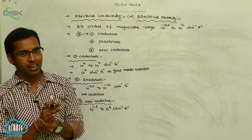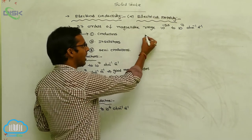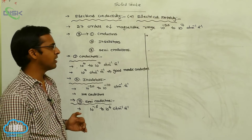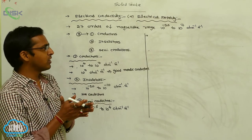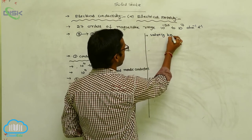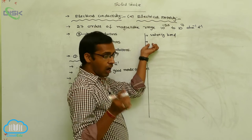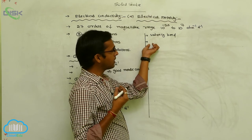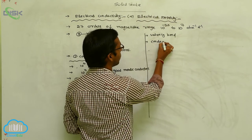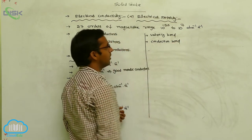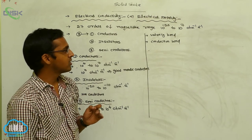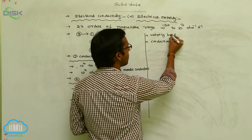Regarding the electrical conductivity of solid state substances: the atomic orbitals form molecular orbitals that are arranged close together and produce a valence band. The partially occupied or completely occupied high-energy band above the valence band is called the conduction band. The valence band has less energy and the conduction band has more energy. These are simply called bands.